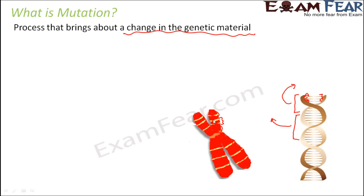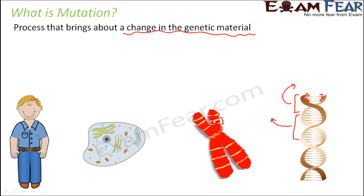This change in genetic material is known as mutation. Mutation and recombination are totally two different things. Recombination takes place during meiosis, where non-sister chromatids of homologous chromosomes exchange parts to form new combinations. In mutation, a change in the gene or chromosome directly affects the trait. When the DNA changes, the genotype changes, and when the genotype changes, the phenotype also changes — such changes are known as mutations.